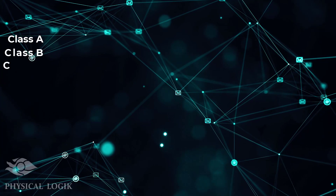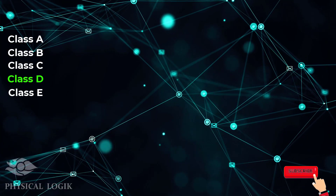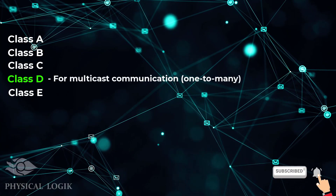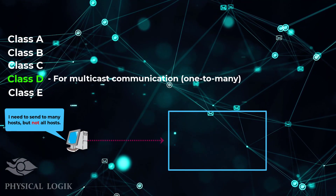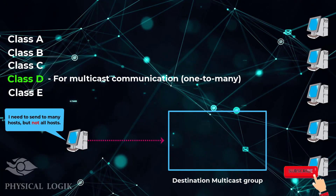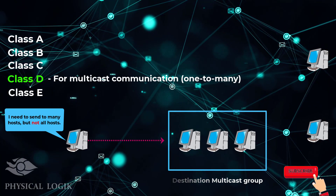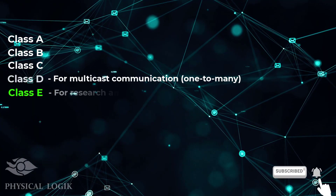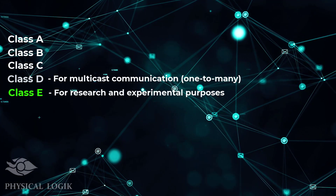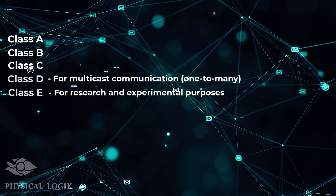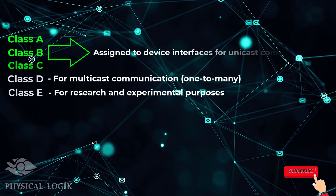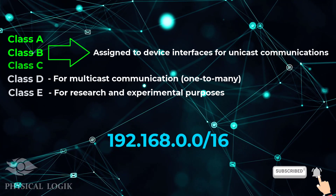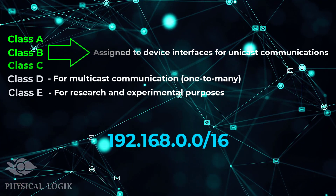There are five classes of IP addresses. Class D is specially reserved for what is called multicast communication — when one device needs to send data to multiple destinations at once, a multicast address can be used as the destination address. Devices that need the information must join a multicast group. Class E IP addresses are reserved for research and experimental purposes, so you may never see any device configured with them. Classes A, B, and C are configured on device interfaces to implement Layer 3 communication. In this category, we find the 192.168.0.0/16 block of IP addresses.